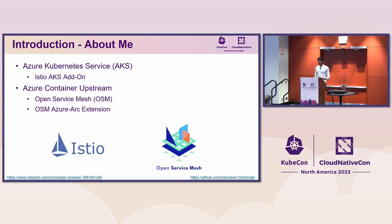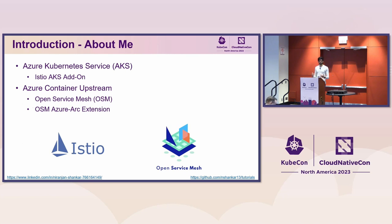I have experience working both on managed and open source service meshes. One of my focuses more recently, working on managed Istio, has been deciding which features we want to incorporate into our add-on, which features we want to disallow, and how to go about doing so. In this presentation, I wanted to share some of those lessons to help you untangle your service mesh with feature gates.